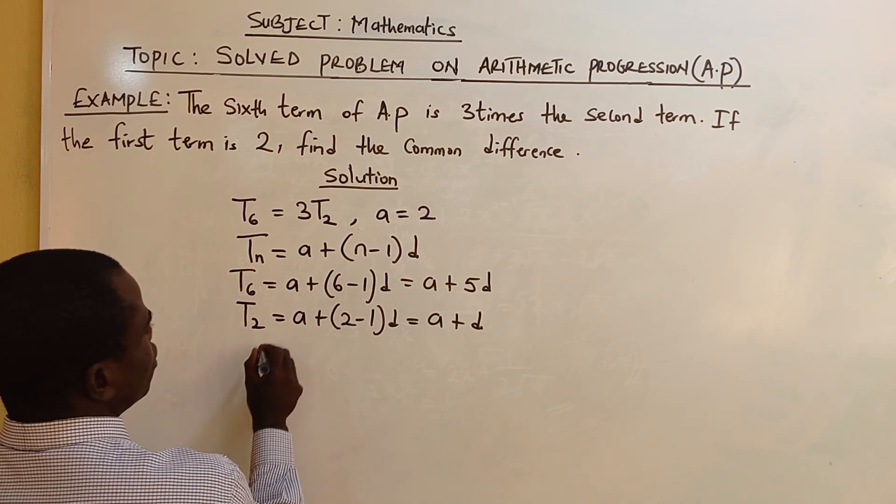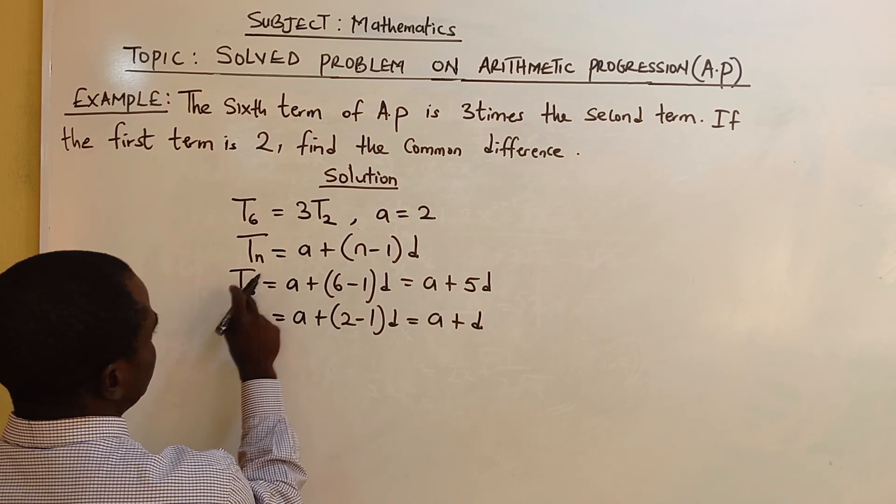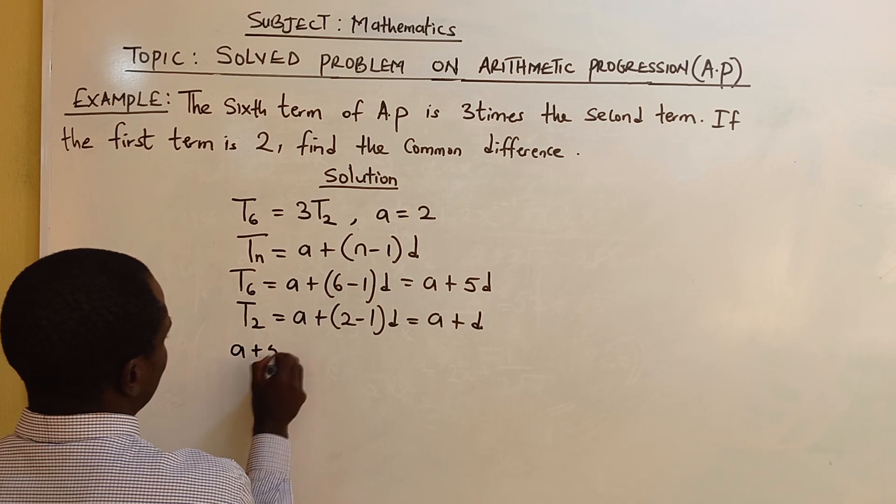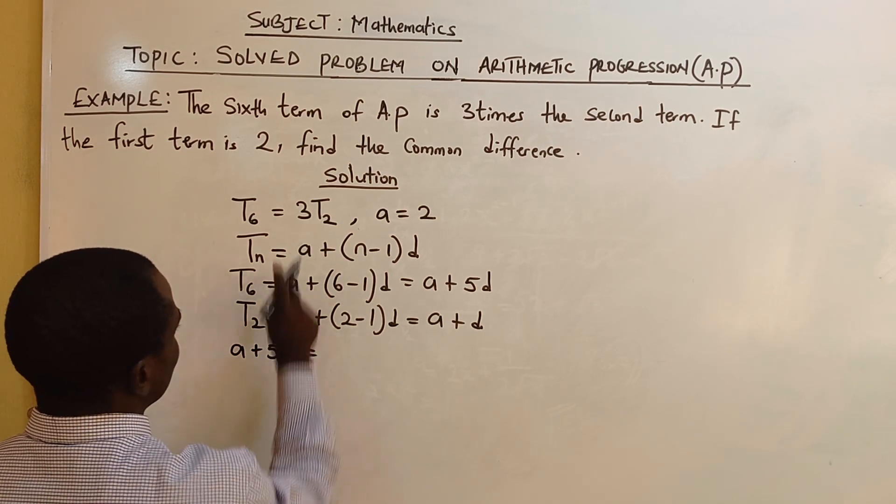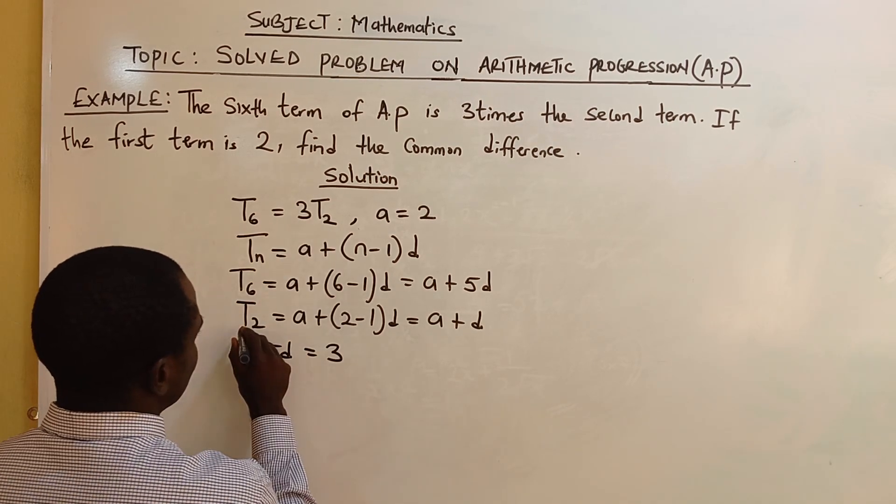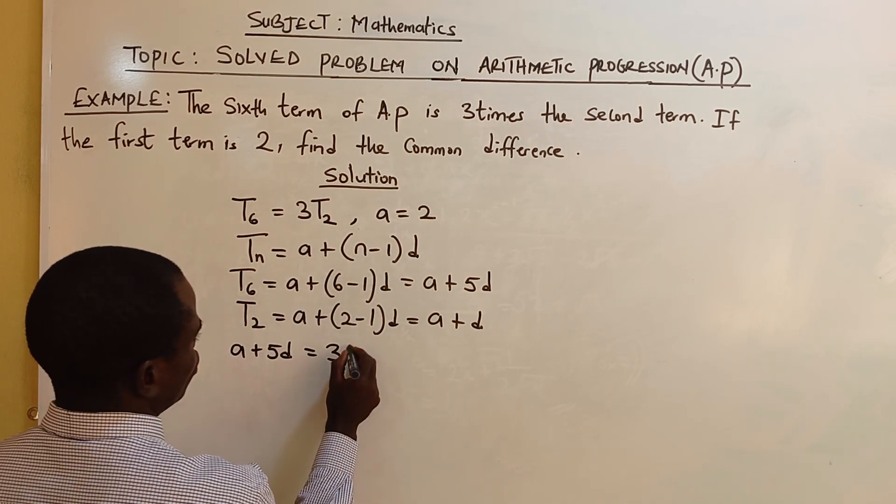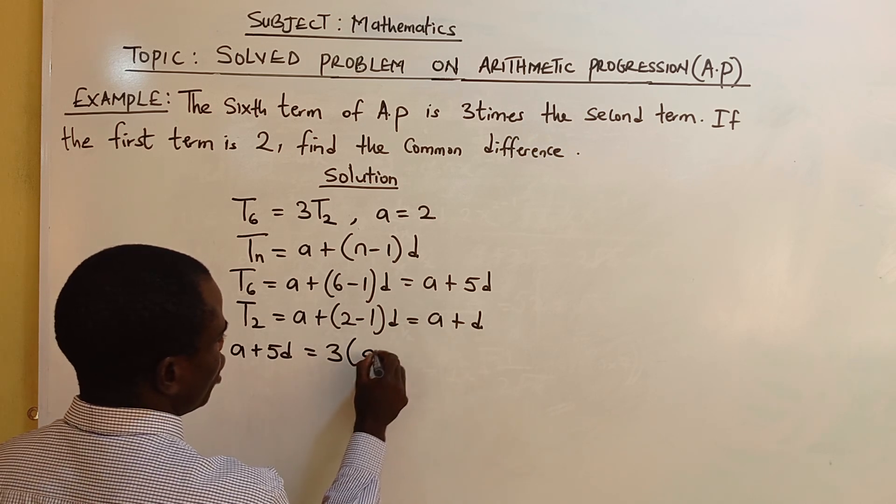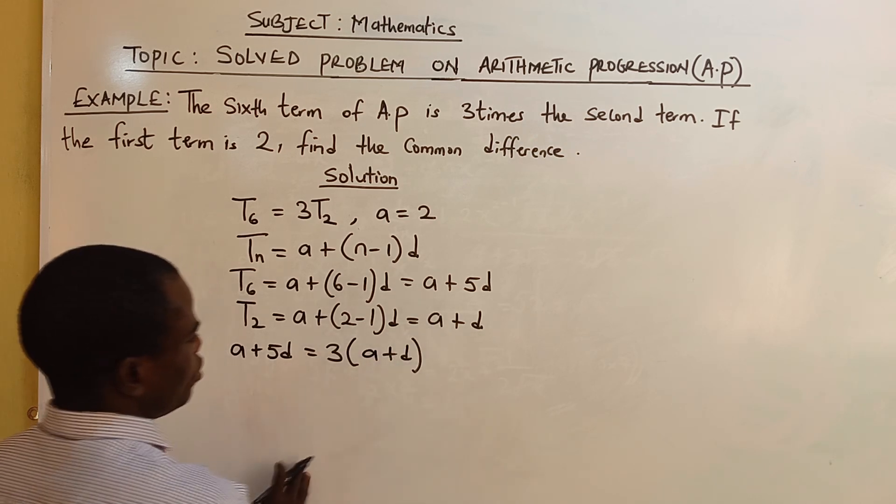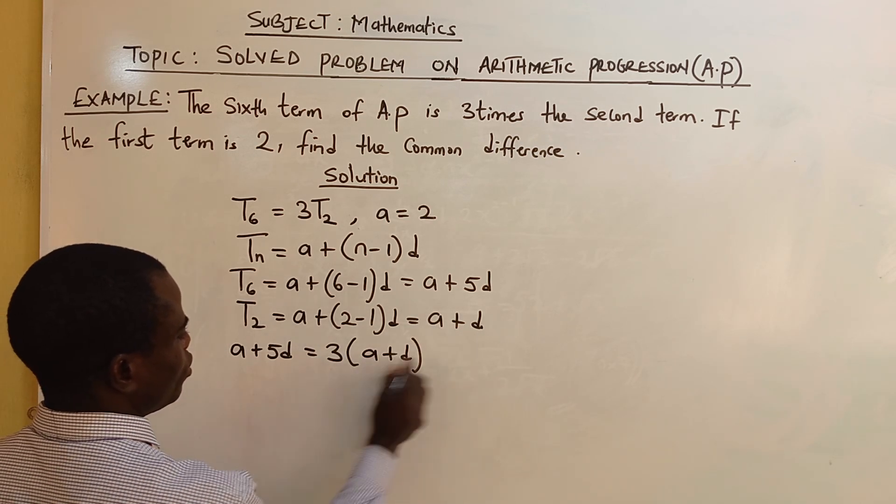Now we are told that T6, which is this, A plus 5D equals 3 times the T2. And our T2 is A plus D. Okay, T2 is A plus D, replace it.